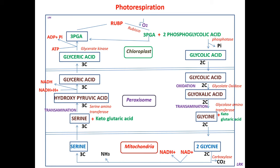Glycolic acid, a two carbon compound, is synthesized in green leaves in light but not in the dark. When oxygen concentration in the external atmosphere increases, there is an increase in glycolic acid in an illuminated leaf. When CO2 concentration is increased, there is reduction in the formation of glycolic acid. Thus high concentration of O2 and low concentration of CO2 in the atmosphere favor formation of glycolic acid and hence photorespiration.